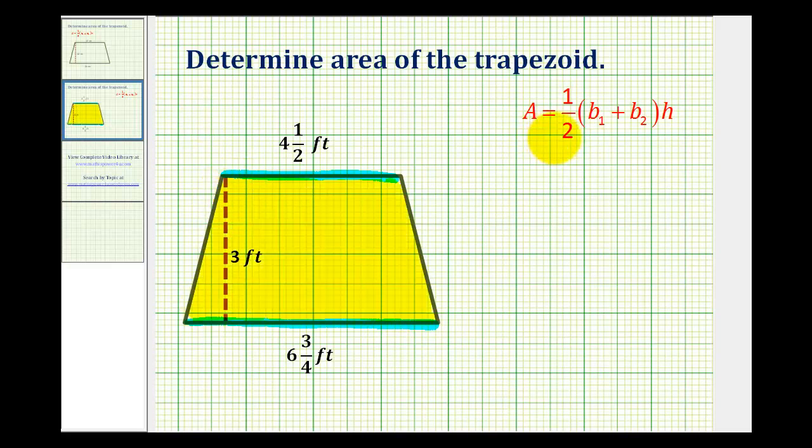The formula to determine the area of a trapezoid is area equals one half times the quantity of the length of base one plus the length of base two times the height. Where base one and base two are the two parallel sides.